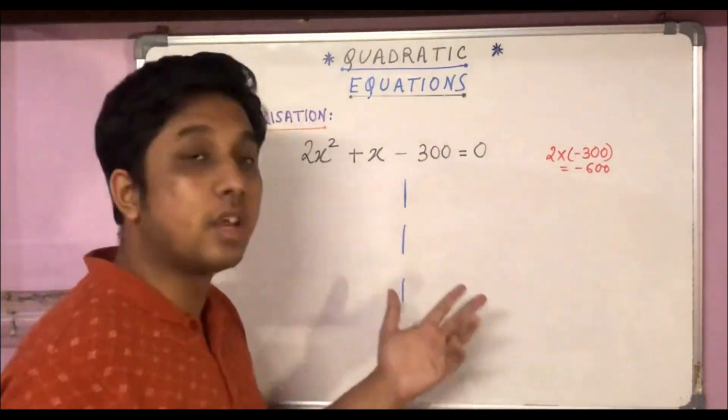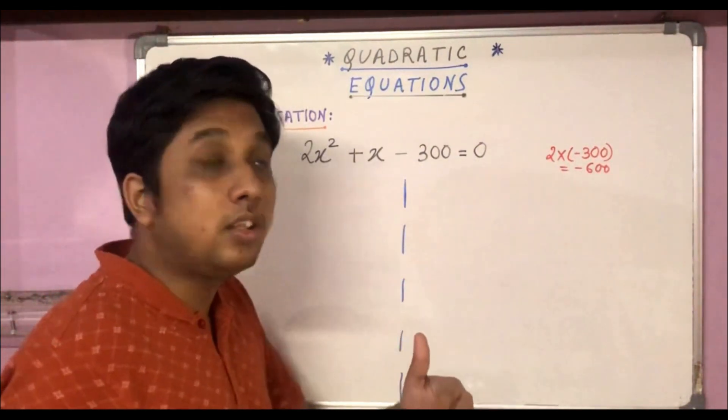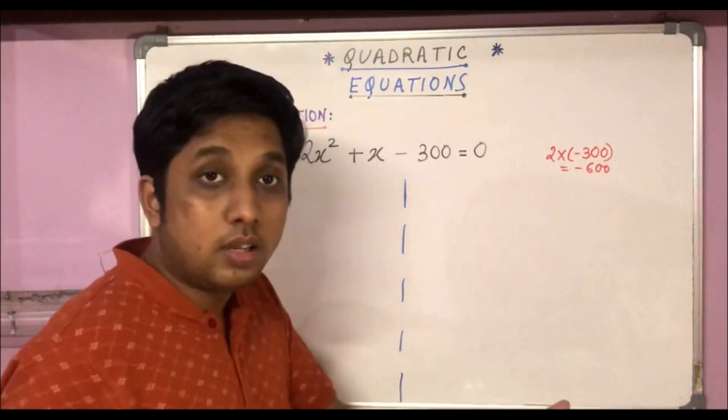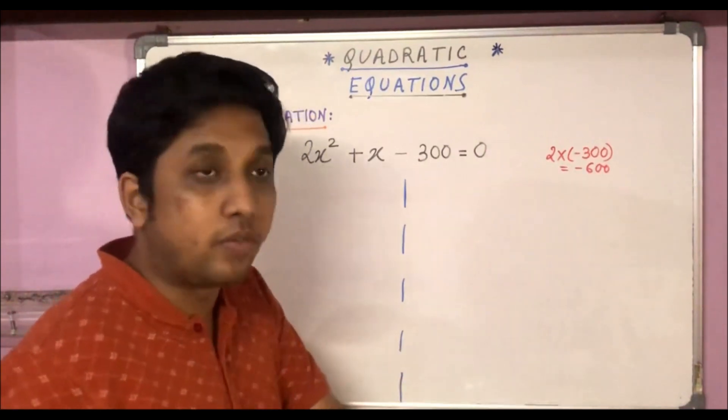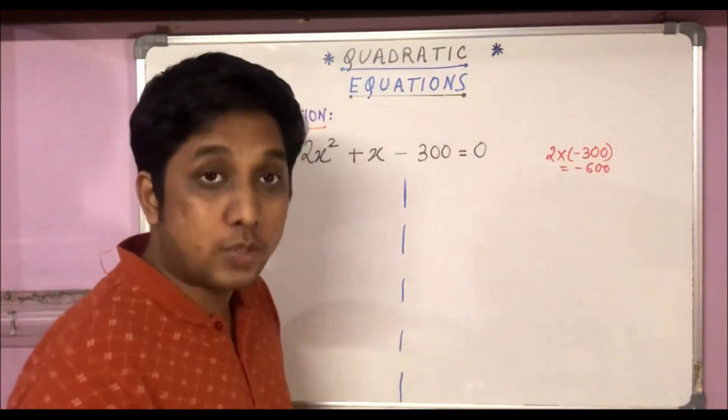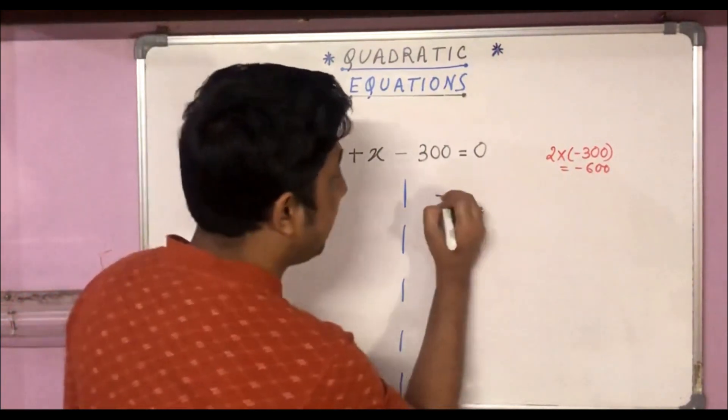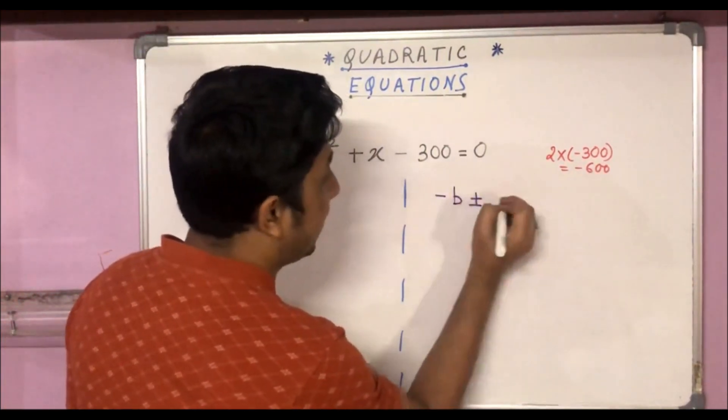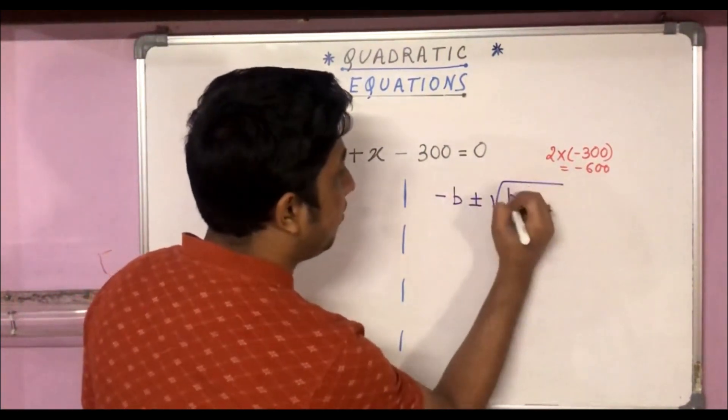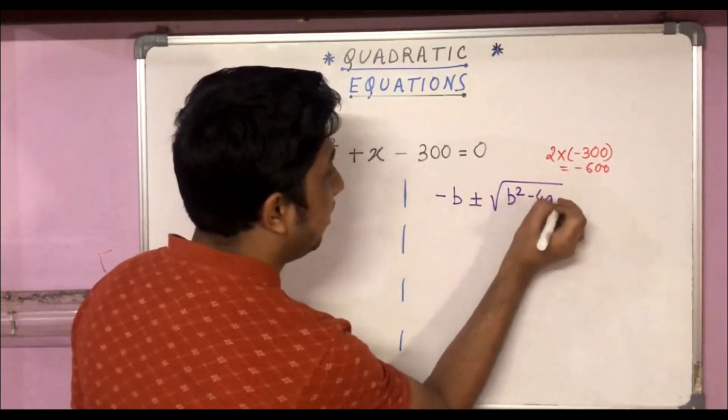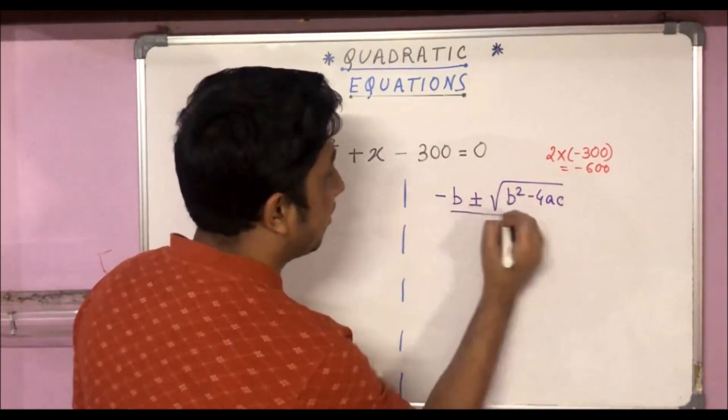It's very interesting. We have to use the quadratic formula but in a slightly modified form. The quadratic formula as we know is minus b plus minus root over b² - 4ac divided by 2a.